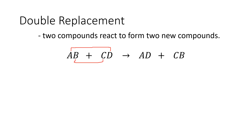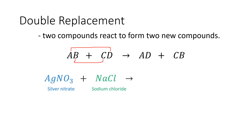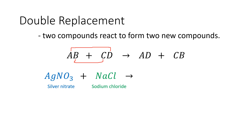That is why the name of this reaction is double replacement or exchange — it's like having an exchange of partners. For example, silver nitrate will react with sodium chloride.